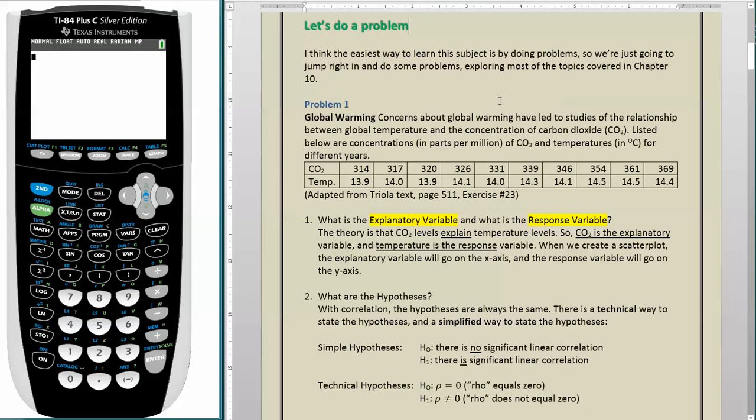Concerns about global warming have led to studies of the relationship between global temperature and the concentration of carbon dioxide. Listed below are concentrations in parts per million of CO2 and temperatures in degrees Celsius for different years. This table is giving you, year by year, the CO2 level and temperature. I think there's 10 different years represented here. This table is adapted from the Triola text, page 511, exercise number 23.